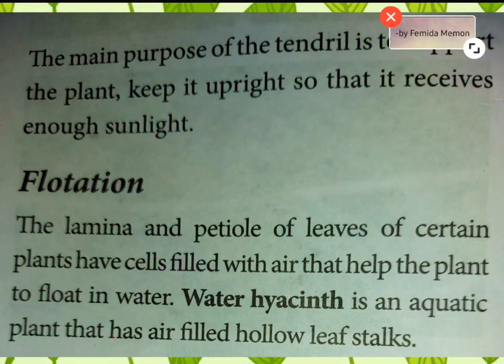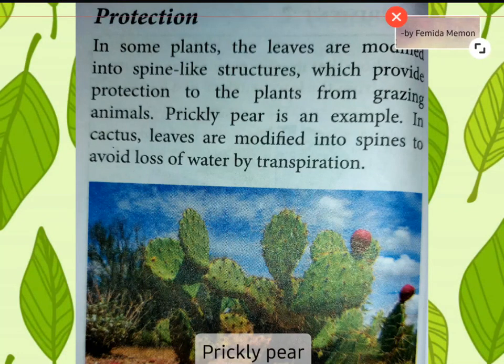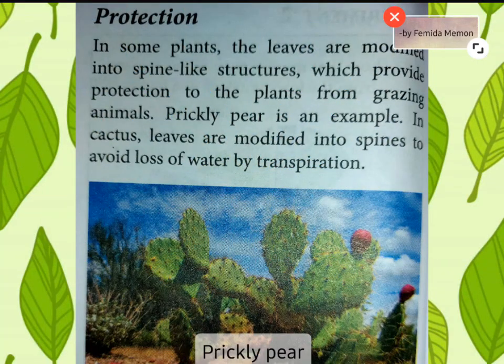Number three, floatation: the lamina and petiole of leaves of certain plants have cells filled with air that help the plant to float in water. Example: water hyacinth, which is an aquatic plant. Number four, protection: in some plants the leaves are modified into spine-like structures which provide protection to the plants from grazing animals.